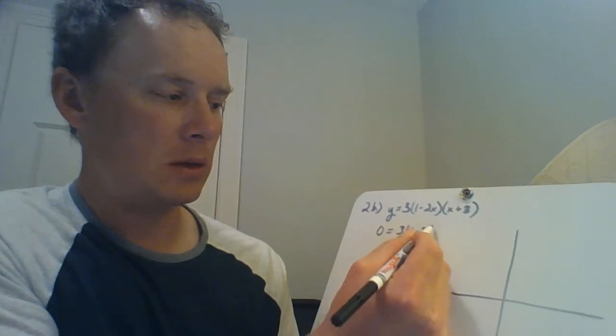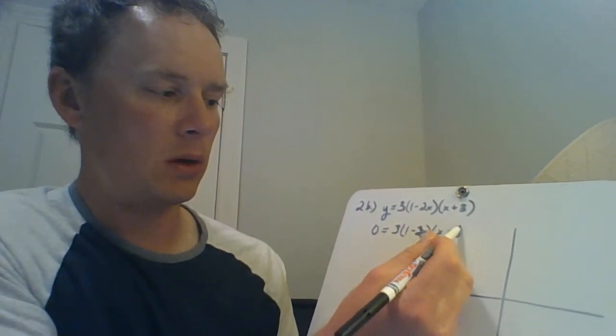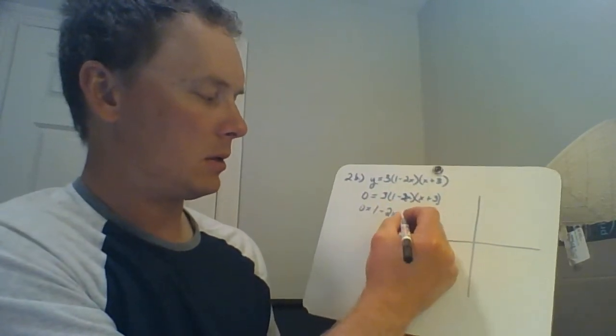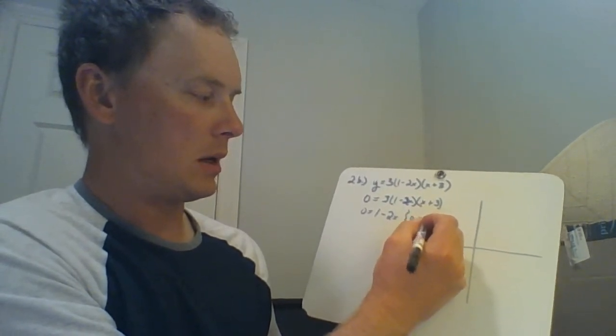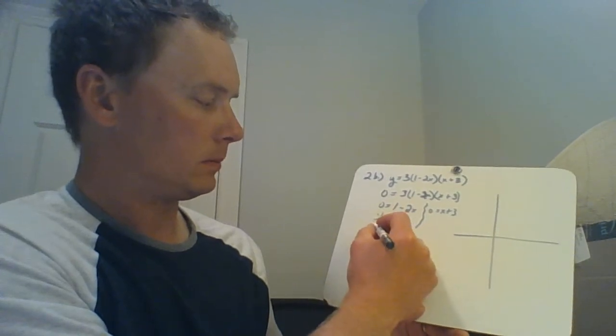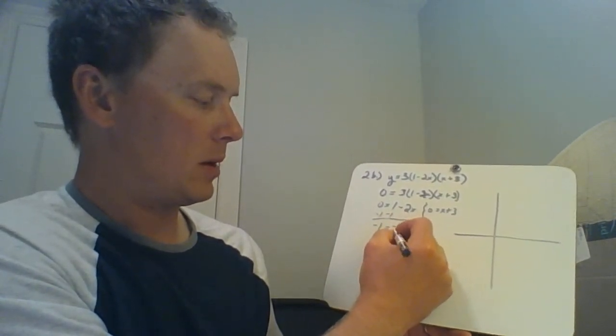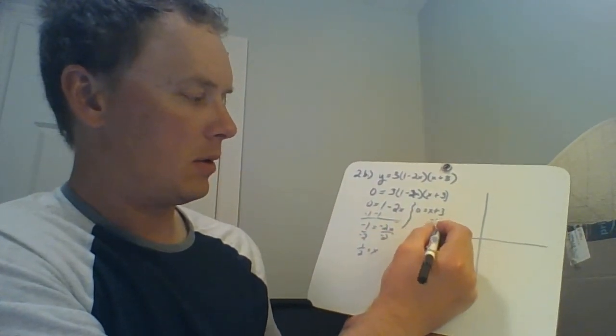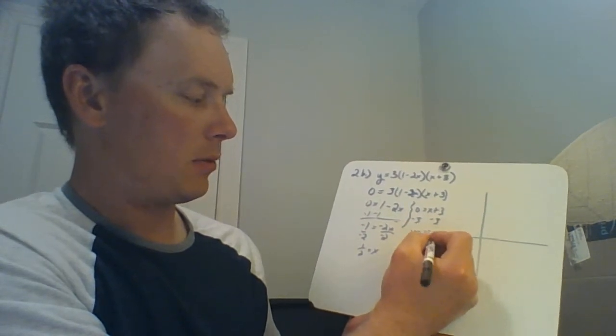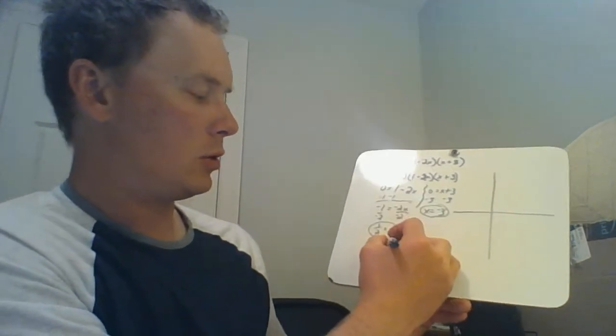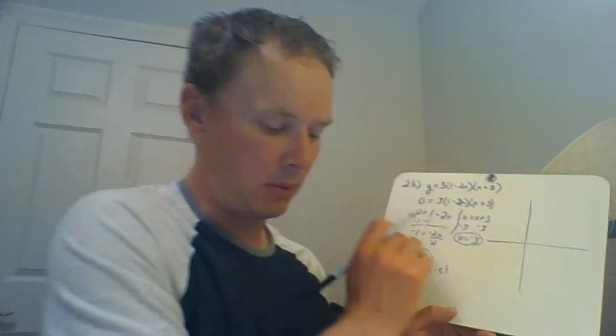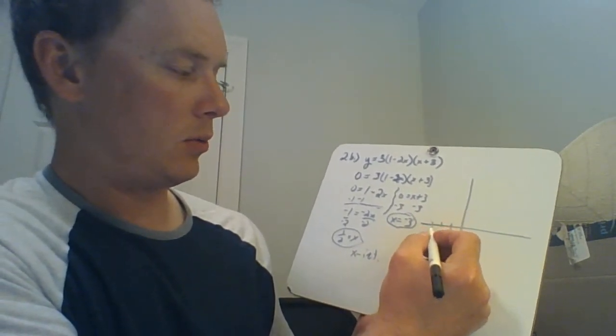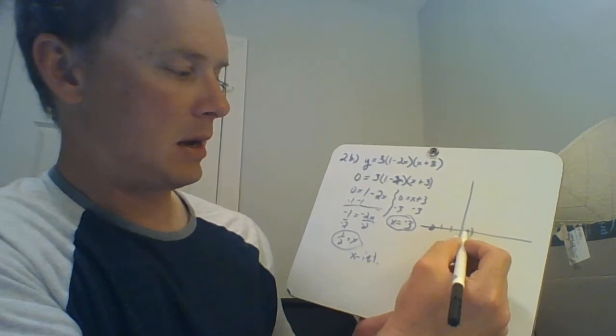So this idea of finding the x intercepts requires us setting y equal to zero. And then all you're doing from here is setting each one of those factors equal to zero. So zero equals 1 minus 2x, and then the other one, zero equals x plus 3. So you're solving these. Negative 1 equals negative 2x, divide by negative 2, you get x is 1 half. And over here, x is negative 3. So those are our two x intercepts. They asked us to graph those. So an x intercept of 1, 2, 3, negative 3, and then positive 1 half right there.